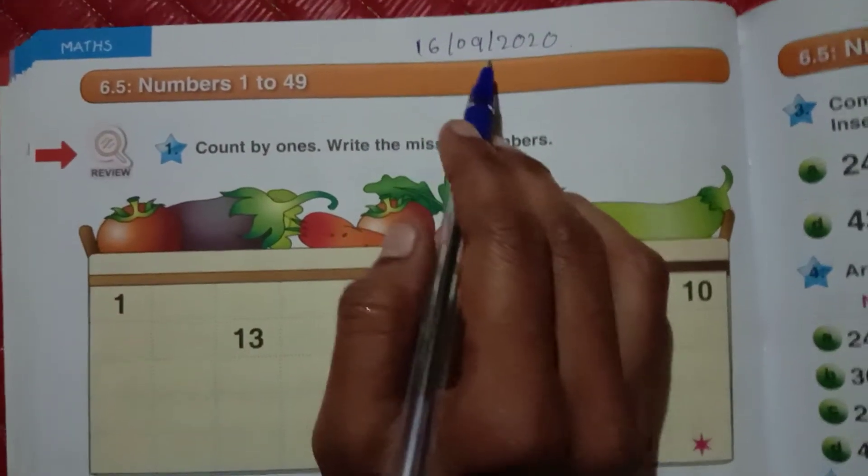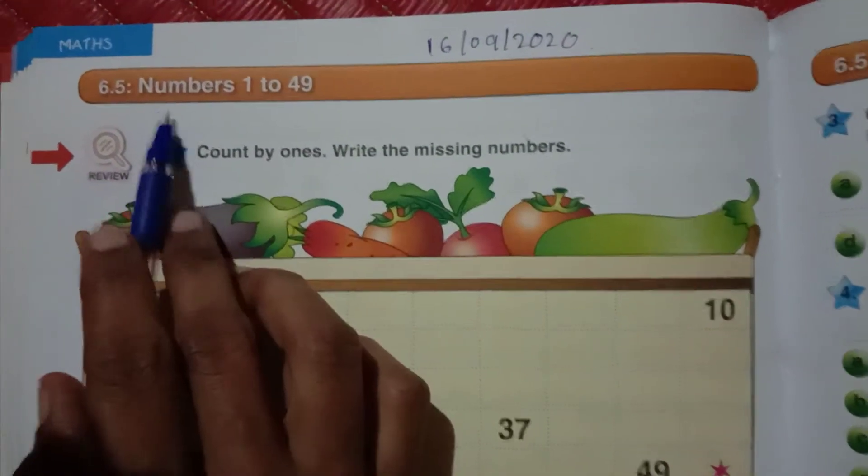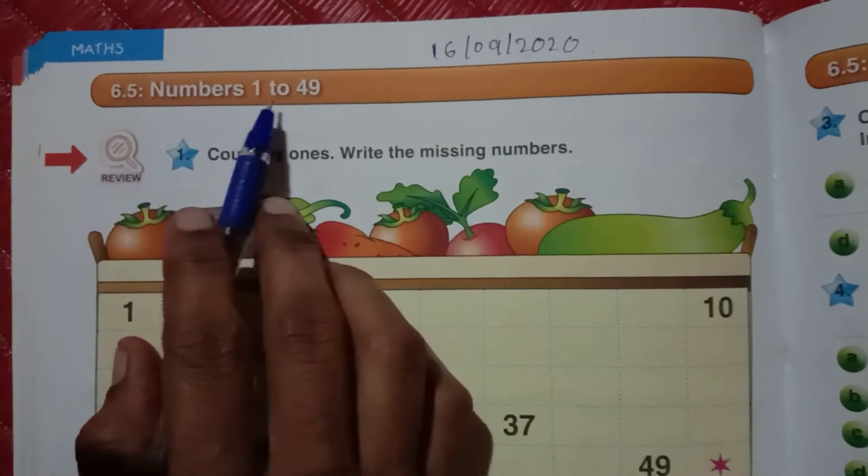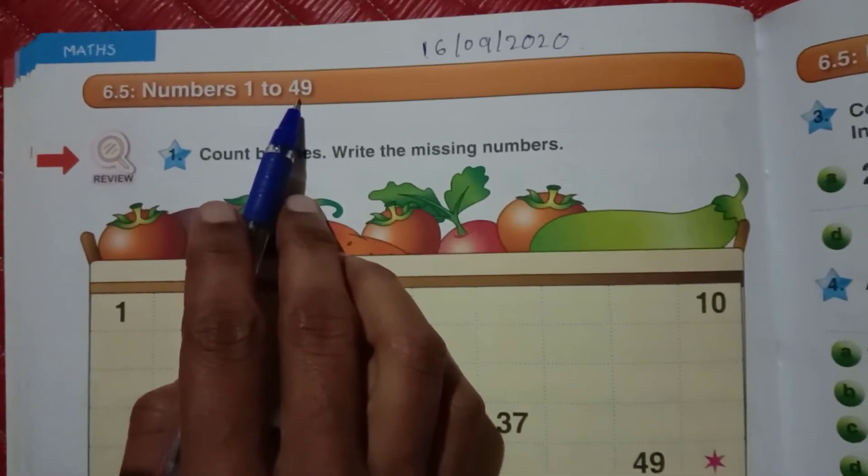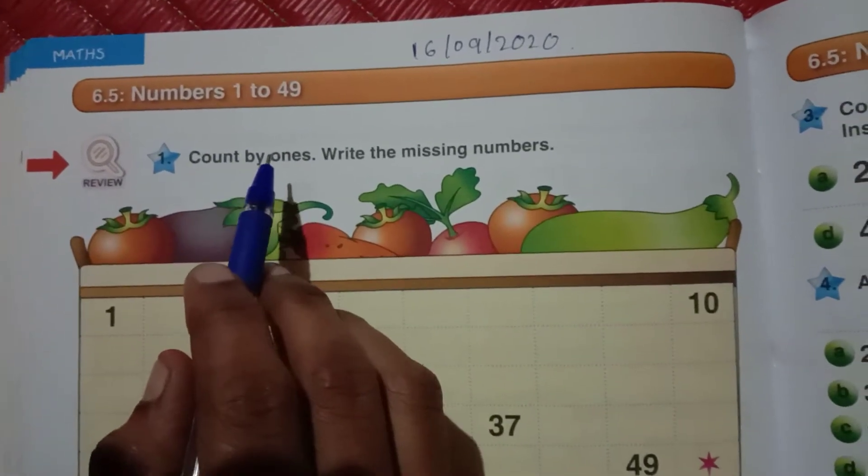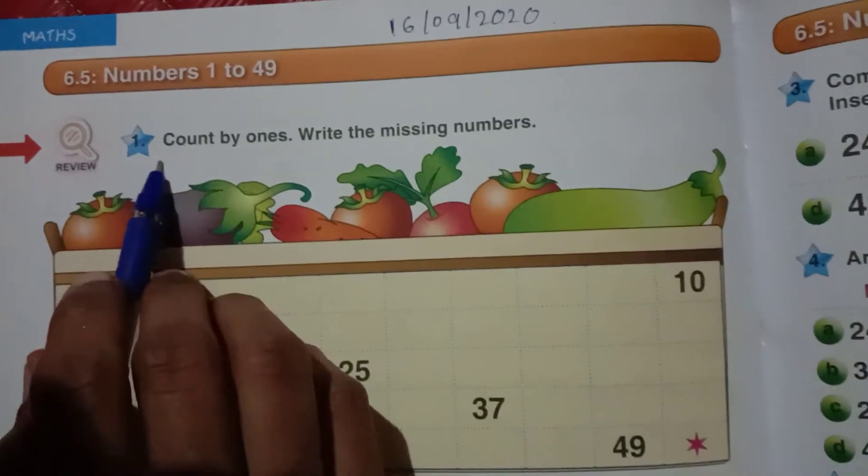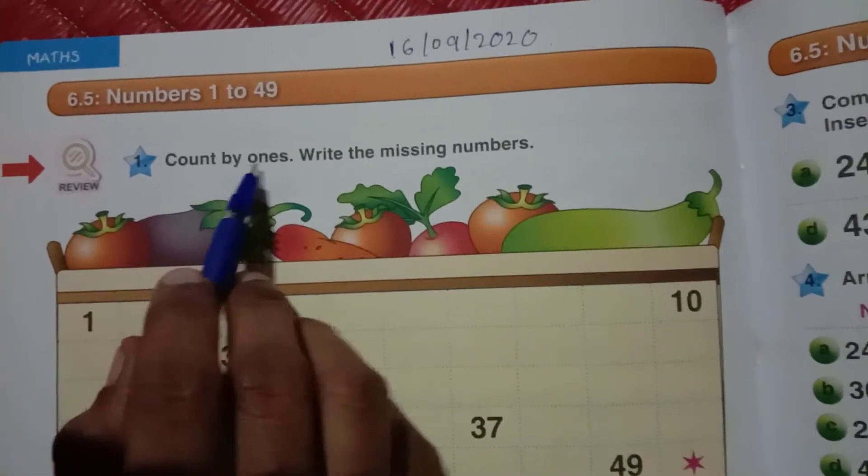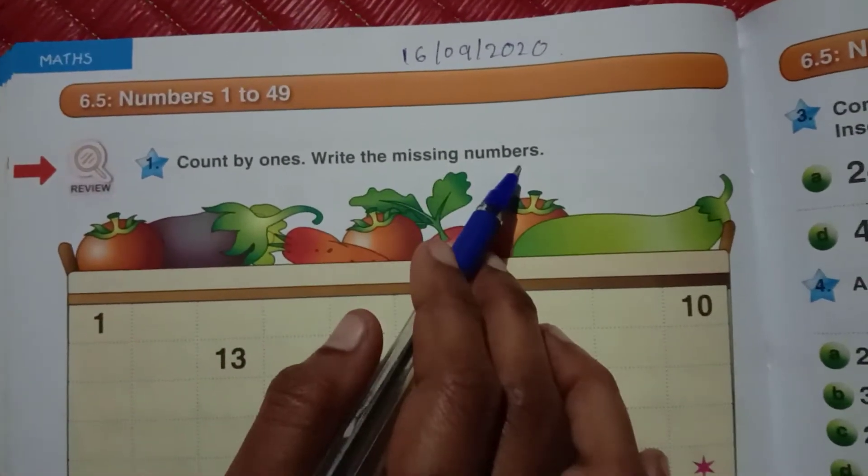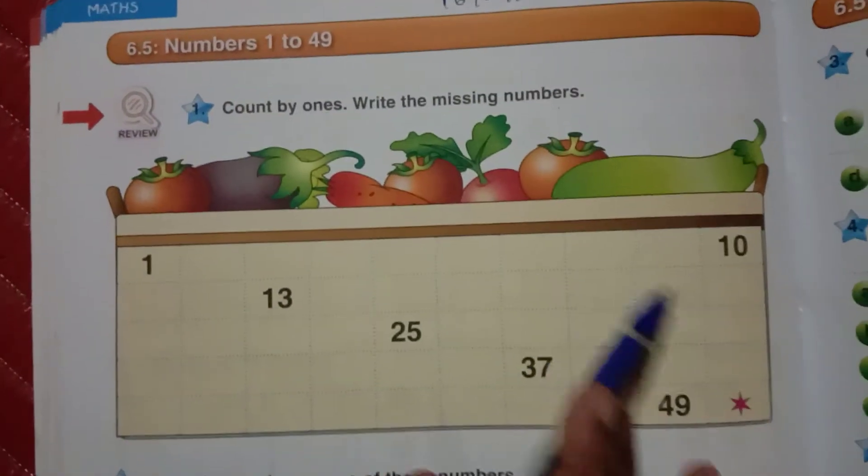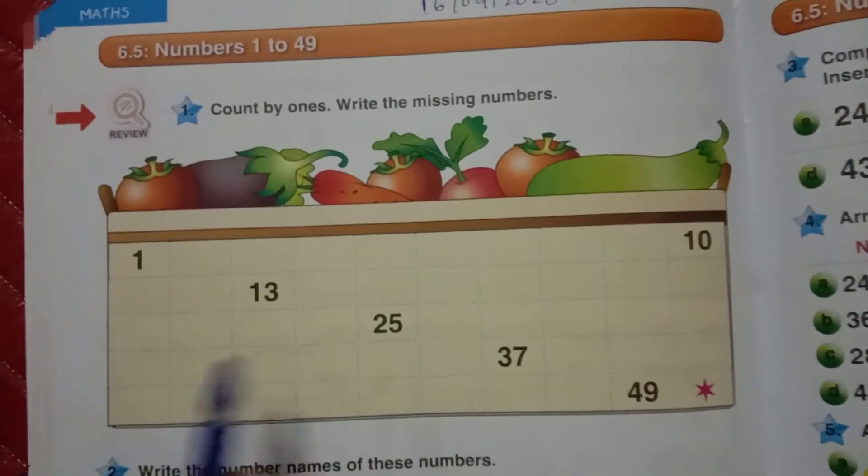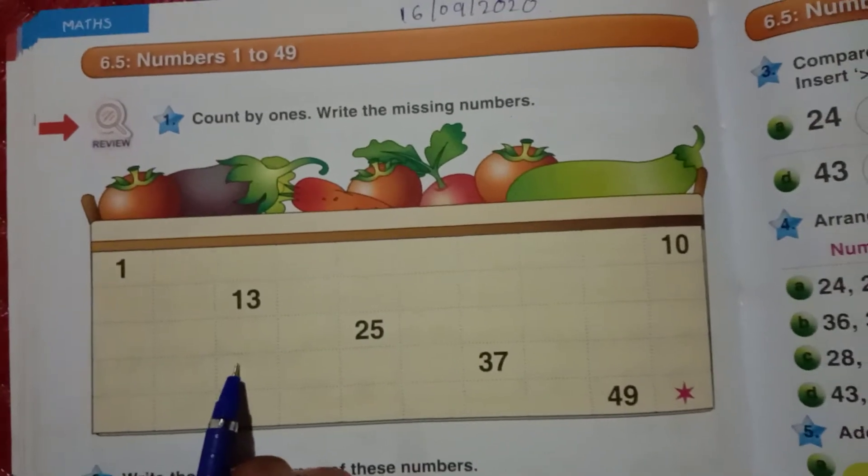The online class, today's date is 16/9/2020. In today's class we will discuss numbers 1 to 49. Okay, take your textbook and see page number 146. Let us start the class. Count by ones, write the missing numbers. Okay, they given some number strip here and you have to write the missing numbers in this strip.